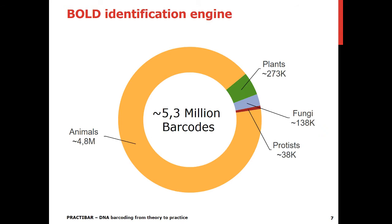I'll move to talk briefly about the identification engine, since this is the part of most interest to you for the practical session of this training, but also for the work that you do at your home institutions. The database used for identification purposes has millions of barcodes — more than 5 million, and probably by the time of this talk may be closer to 6 million barcodes. As you can see in this figure, most of them belong to the animal kingdom, more precisely to the insect group. The other kingdoms are much less represented. DNA barcoding was initially proposed for the animal kingdom, and more effort has been dedicated to it. And with regards to insects, they are the most diverse animal group according to current knowledge, but they also benefit from having a very large community of dedicated entomologists.